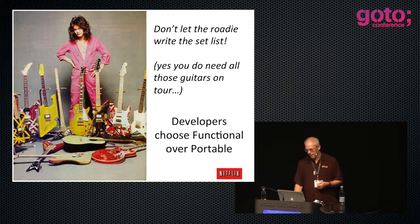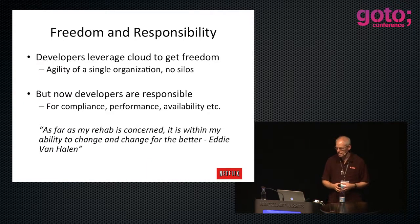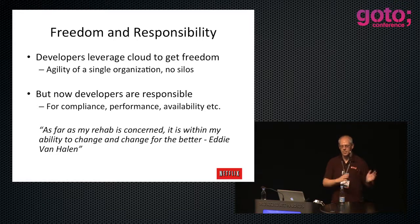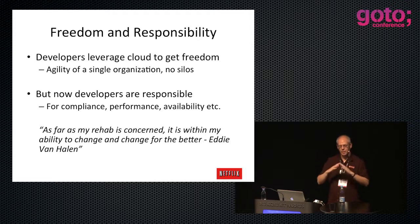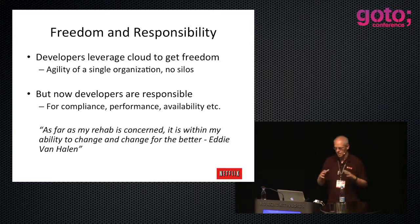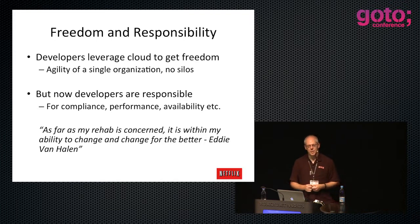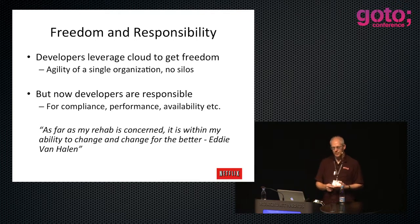At Netflix we call this freedom and responsibility. Developers are leveraging the cloud to get their freedom. We have no silos - it's a single organization with no separate IT ops organization constraining what developers can do and no separate product organization. We're one integrated product unit that includes all development and operations, and at the bottom it just calls Amazon APIs directly.